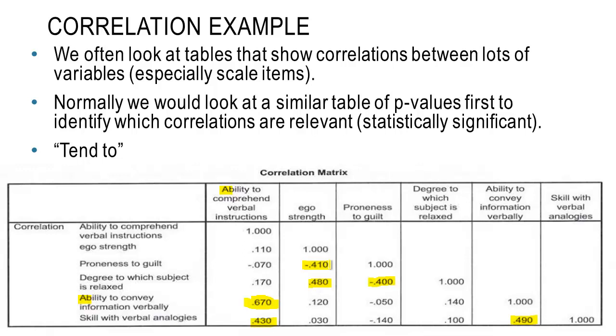So if we have a look at this one here, the negative 0.410, that tells me about the relationship between ego strength and proneness to guilt. It's negative, so it's saying that as someone's ego strength increases, their proneness to guilt tends to decrease. Underneath it, the 0.48, we can see ego strength is also related to the degree to which the subject is relaxed.